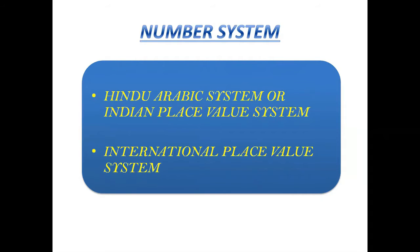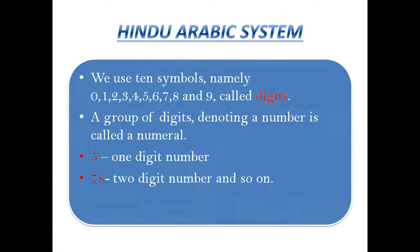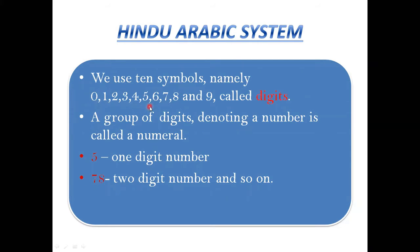There are two types of number system: one is the Hindu Arabic system, which we also call the Indian place value system, and the other is the international place value system. In the Hindu Arabic system, we use 10 symbols: 0, 1, 2, 3, 4, 5, 6, 7, 8, and 9. These 10 symbols are called digits.